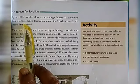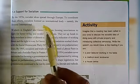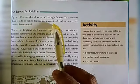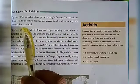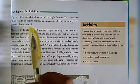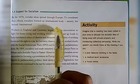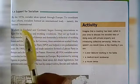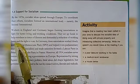By the 1870s, socialist ideas spread through Europe. To coordinate their efforts, socialists formed an international body, namely the Second International.